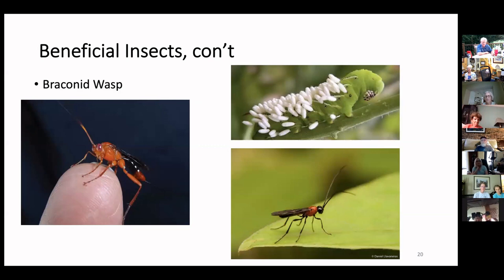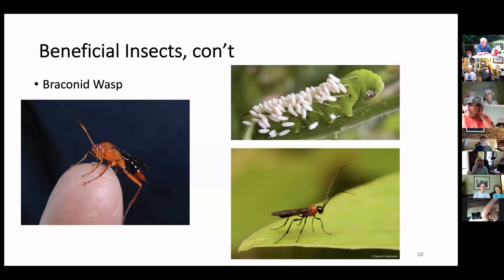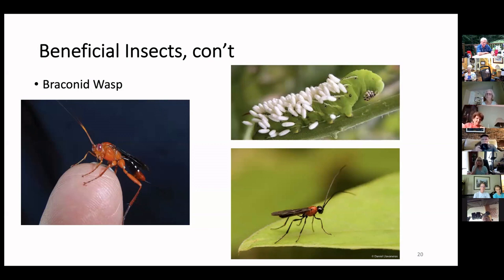This is a braconid wasp — almost every wasp is actually a predator and many are also pollinators. You can see the braconid on an index finger for scale. On the tomato hornworm, you see all those little white things — those are cocoons. The braconid wasp lays eggs all over hornworms; when the larvae hatch they spin cocoons attached to the hornworm, penetrate its skin, inject digestive juices, and suck the insides out. When you see a hornworm like this, leave it alone — it's too sick to eat and will die, and you'll hatch more braconid wasps that you want.